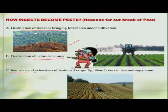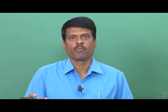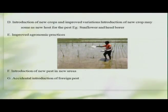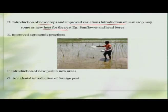Another reason is the extensive and intensive cultivation of crops. For example, thousands of acres being covered under a single crop like paddy, sugarcane, or cotton gives insects thriving on such crops a tremendous opportunity to multiply and become pestiferous. The next reason is the introduction of new crops or improved varieties, which also leads to pest formation. Improved agronomic practices such as fertilizer application — for example, applying more and more nitrogenous fertilizer to crops like paddy — leads to the development of newer pests such as leaf folders, brown plant hoppers, etc.